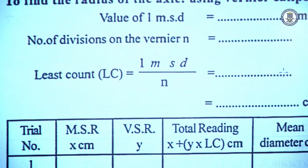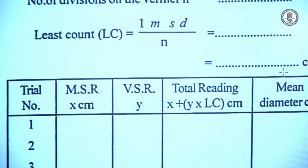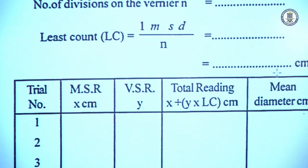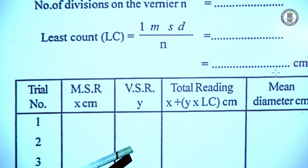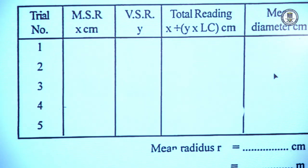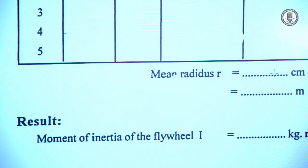This is the table column to find the diameter of the axle. The main scale reading and vernier scale reading are noted, and the total is calculated to obtain the diameter. From the mean diameter we obtain the radius, and finally we obtain the result: the moment of inertia of the flywheel.